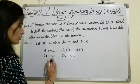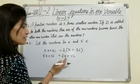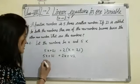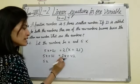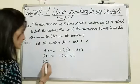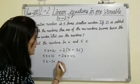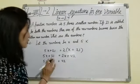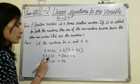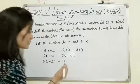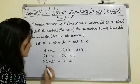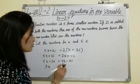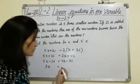Now transposing 21 to RHS and 2x to LHS. 5x minus 2x, 2x is positive so convert into negative, minus 2x equals to 42. 21 is positive so convert into negative, minus 21.